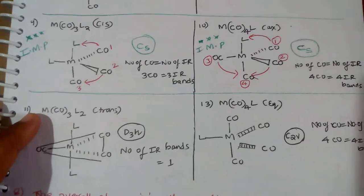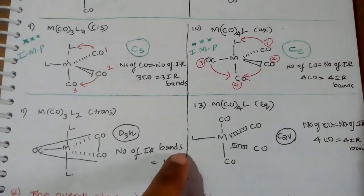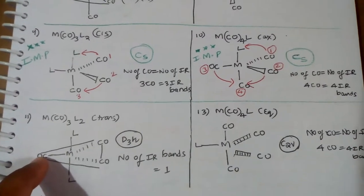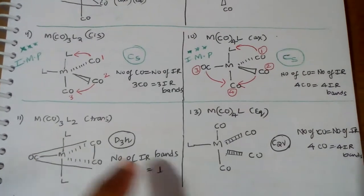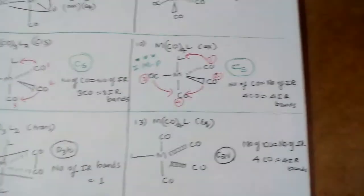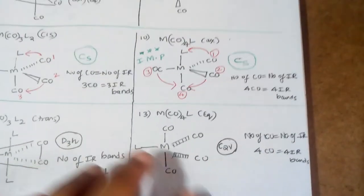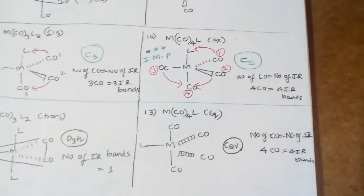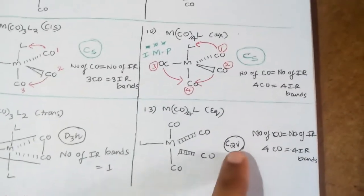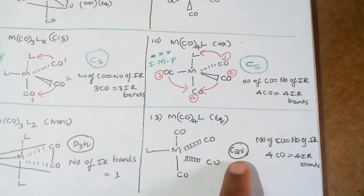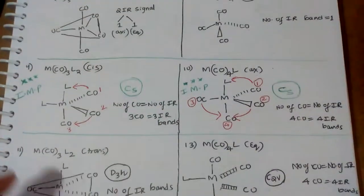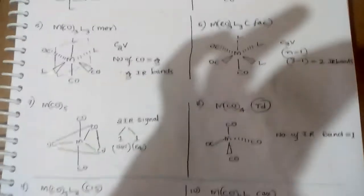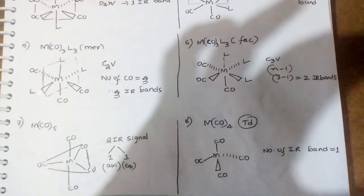For MCO3L2 trans complex, number of IR bands equals one, because all three CO groups are in the same equatorial plane — they give one IR band. For MCO4L equatorial, number of CO equals number of IR. Four CO groups give four IR bands because its point group is C2V. Friends, this is all for today's class. I hope you understood. Please subscribe to my channel GPSTR CTT.